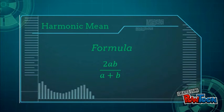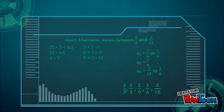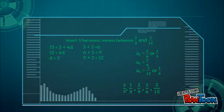Formula for harmonic mean: 2ab/(a+b). For example, given that 2/3 is the first term and 2/15 is the fifth term, insert 3 harmonic means. 15 = 3 + 4d, solving gives d = 3. Therefore, a₂ = 2/6, a₃ = 2/9, and a₄ = 2/12.